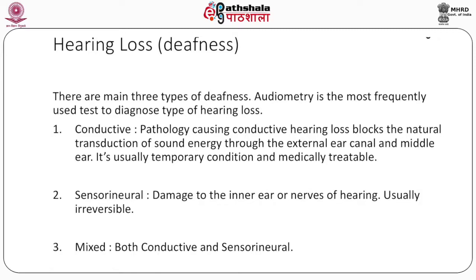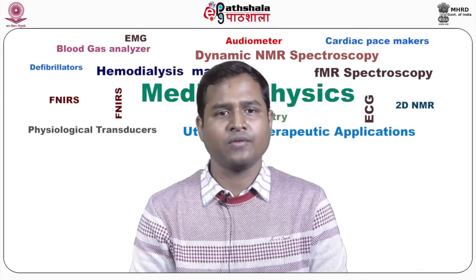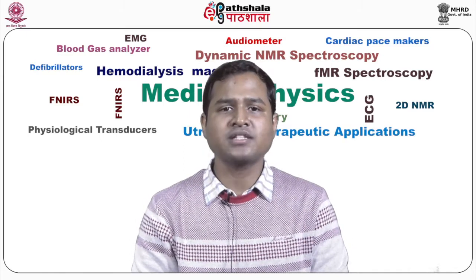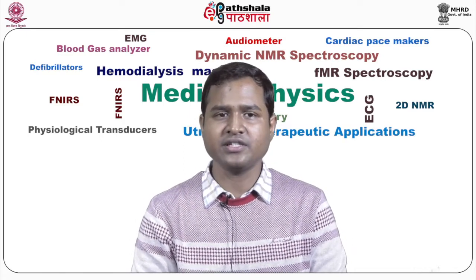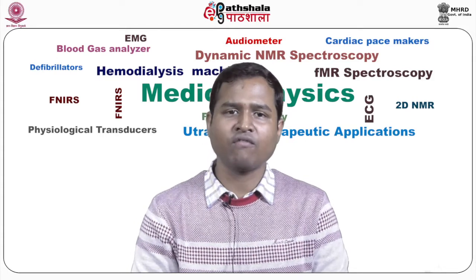First, conductive deafness. Conductive type of hearing loss indicates an obstruction to the flow of sound from the atmosphere to the inner ear. Pathology causing conductive hearing loss blocks the natural transduction of sound energy through the external ear canal and the middle ear. It is usually a temporary condition and is medically treatable. Causes of conductive hearing loss: first, wax impaction in the ear canal, which is the commonest cause of conductive deafness.